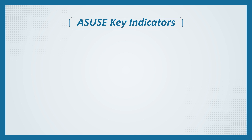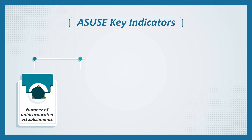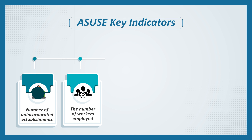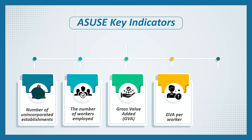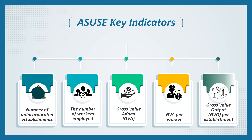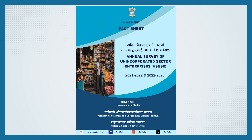The survey results provide key indicators such as the number of unincorporated establishments, the number of workers employed, Gross Value Added (GVA), GVA per worker, and Gross Value Output (GVO) per establishment.